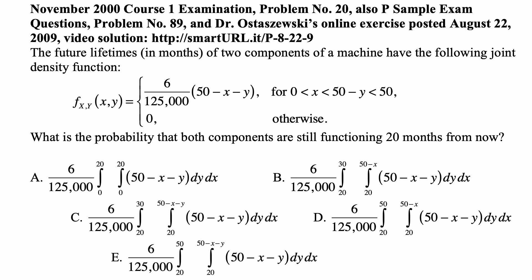Here's a problem for today for exam P on probability. The future lifetimes in months of two components of a machine have the following joint density function: f_xy(x,y) equals 6 over 125,000 times (50 - x - y) whenever x is between 0 and 50 - y, and 50 - y is less than 50, and 0 otherwise.